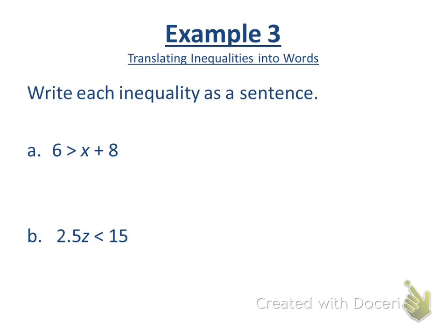Now let's use words to write these sentences. Elizabeth, give me one for letter A. Six is greater than the sum of a number and eight. Six is greater than the sum of a number and eight. Or eight more than a number or a number increased by eight. There's a lot of different ways you could say that. Letter B, Liam. The product of a number in 2.5 is less than 15. Is less than 15. That's very good.